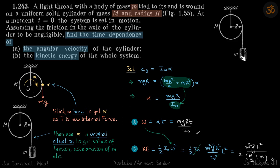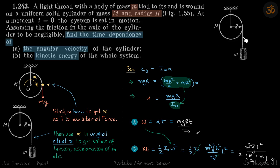We have a small mass m connected to a pulley by a thread. The pulley has mass — it is not a massless pulley. As mass m goes down, the pulley will rotate. We need to find the time dependence of the angular velocity and kinetic energy of the whole system.